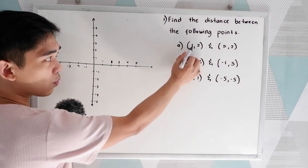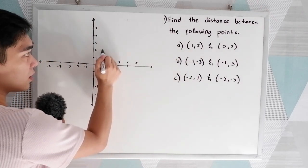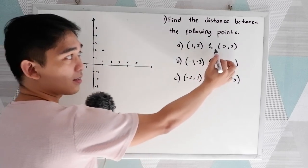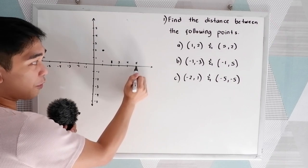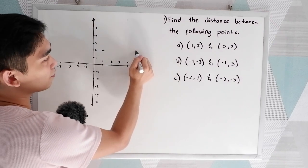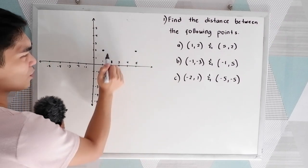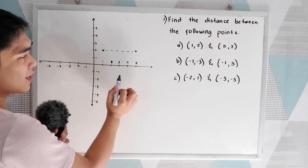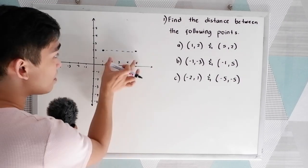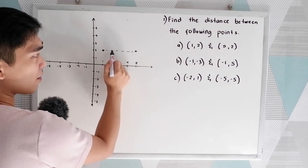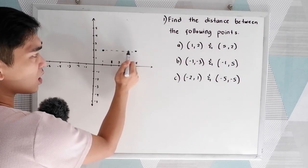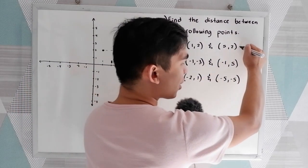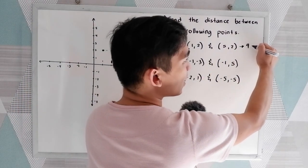First step, we're going to plot (1, 2) — so 1, then 2. That would be our first point. The second point is (5, 2), so 5, then 2. To get the distance between the two points, we're just going to count how many units between them: 1, 2, 3, 4. So the distance between the two points is 4 units.